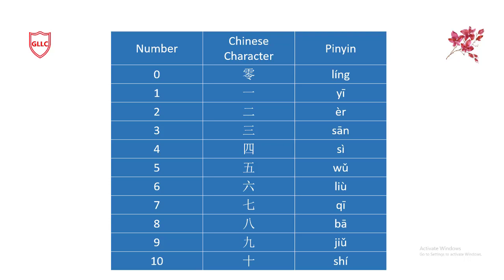So first, let's revise all the numbers in Chinese. How to say 0 in Chinese: 零 (líng). Then: 一 (yī), 二 (èr), 三 (sān), 四 (sì), 五 (wǔ), 六 (liù), 七 (qī), 八 (bā), 九 (jiǔ), 十 (shí).